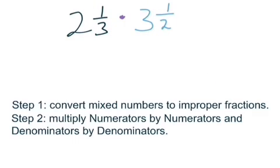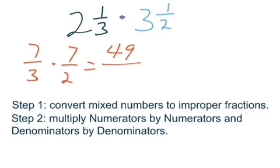Step two. Multiply numerator by numerator, denominator by denominator. Seven-thirds times seven halves. Seven times seven we get at the top is forty-nine, and then three times two right here is six. I just multiplied straight across to get those.